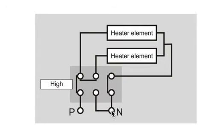So the two elements are now in parallel. And in parallel, we know that the resistance goes down. So we've got low resistance, which gives us high current, which gives us high heat output.